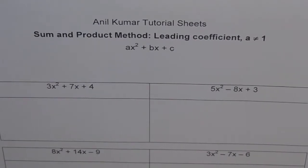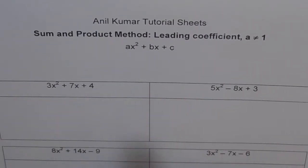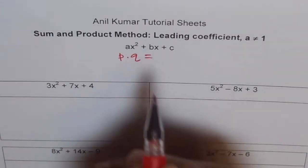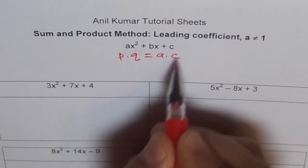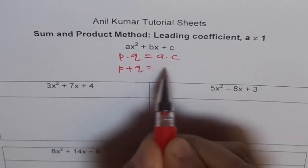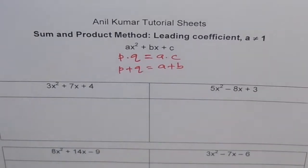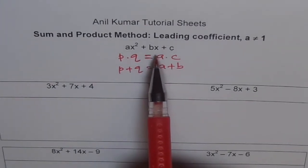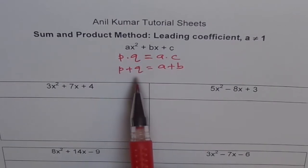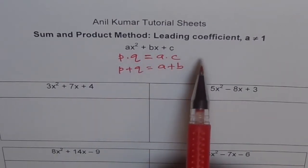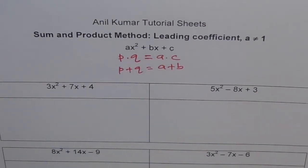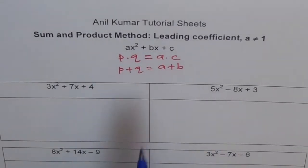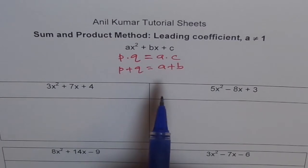What are we trying to find? We are trying to find two numbers, p and q, so that p times q equals a times c, and p plus q equals b. Once we get those two numbers p and q, then we can split the center term bx — b with the value of p plus q. Then we'll have four terms. Then we can combine two and factor. We'll do decomposition of bx, then combine the terms to factor and get the result.